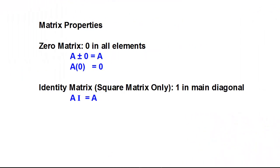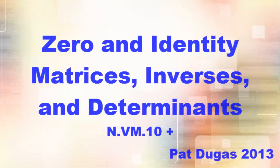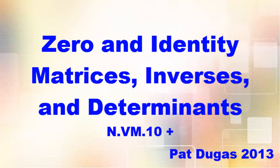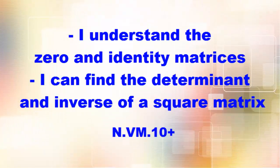To close, here's a summary of the properties we've learned. The zero matrix has zero in all elements; we can add or subtract it to get the original matrix, or multiply by it to get another zero matrix. The identity matrix works only on square matrices — it has ones on the main diagonal — and when we multiply matrix A by the identity matrix, we wind up with the original matrix. That's your introduction to the zero and identity matrices. Next, we'll get to inverses and determinants, all with the goal of solving matrix equations.